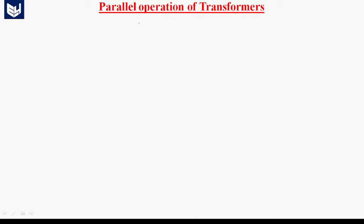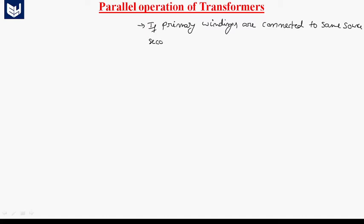When can you say that the connection is parallel? If the primary windings are connected to the same source and the secondary windings are connected to the same load, then we can say that the transformers are connected in parallel.